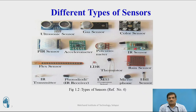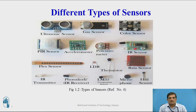Some examples include: ultrasonic sensor, gas sensor, color sensor, PIR sensor, accelerometer sensor, potentiometer, IR sensor, flex sensor, LDR, thermistor, rain sensor, IR transmitter, photodiode, LM35, microphone, and others. These are some of the important sensors listed here. Likewise, there are many more sensors available in the market, and based on the application, you can purchase and use them in day-to-day applications.